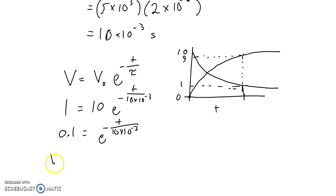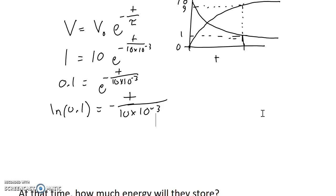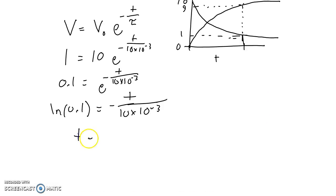Take the natural log of both sides. It gives us the natural log of 0.1 equals negative t over 10 times 10 to the negative 3. From here, we'll multiply both sides by negative 10 times 10 to the negative 3, which gives us t equals negative 10 times 10 to the negative 3 times the natural log of 0.1. You can punch that into your calculator, and what you get is 0.023 seconds.